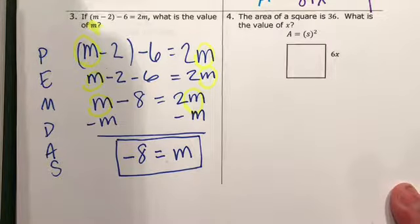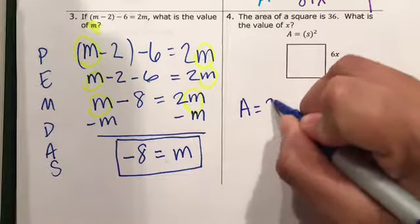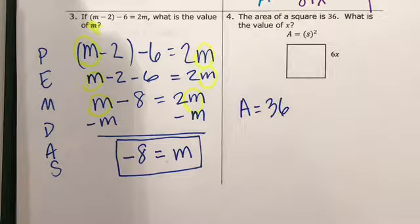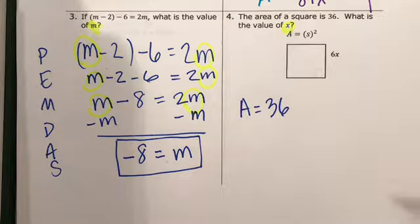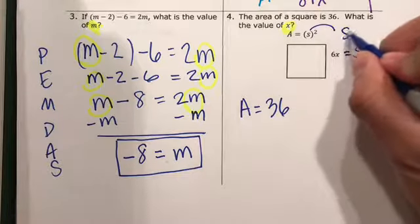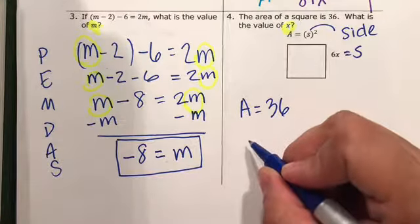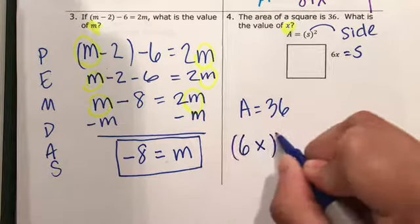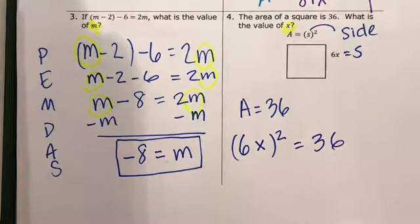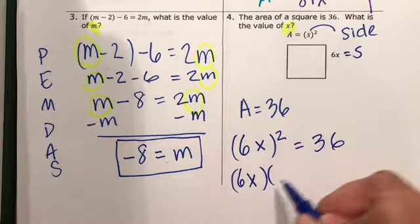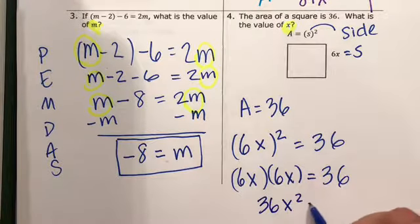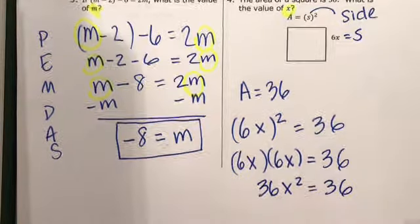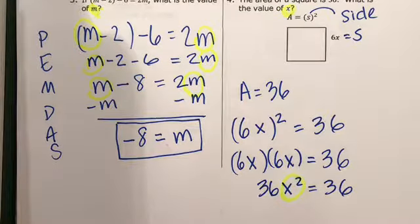The area of a square is 36. What is the value of x? So that means that A equals 36. So x is what we're trying to find. I know this is going to be my side, because that stands for side, squared. So 6x squared equals 36. 6x times 6x equals 36. 36x squared equals 36. And again, we're trying to solve for x. We want to get that by itself.